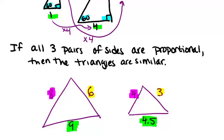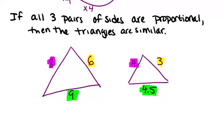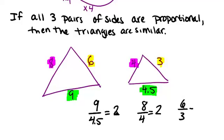And then we can check all of the ratios to see if they're the same. So what you're checking for is if 9 over 4.5 is the same thing as 8 over 4 which is the same thing as 6 over 3. So we should reduce all of these to see what we get. 9 divided by 4.5 is 2, 8 divided by 4 is also 2, and 6 divided by 3 is 2. So because all of the ratios reduce to the same number of 2...